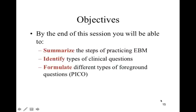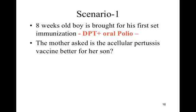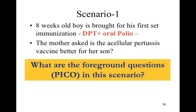Let us move to our third objective, which is to formulate different types of foreground questions called PICO. This is our first scenario: an eight-week-old boy is brought for his first set of immunization, which is DPT and oral polio vaccine. The mother asked, is the acellular pertussis vaccine better for her son? Reading the scenario, we find the mother is asking about a better vaccine, so this PICO is PICO therapy.